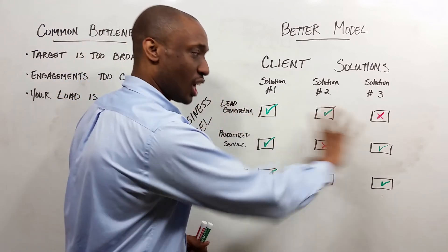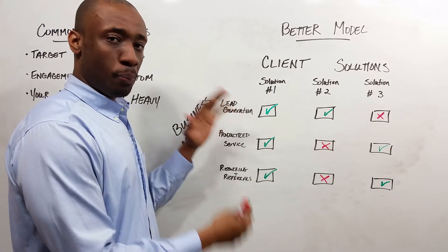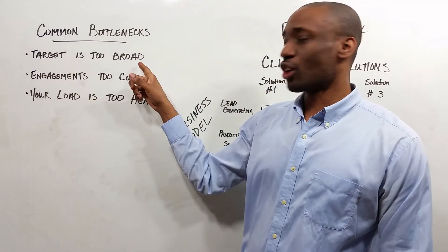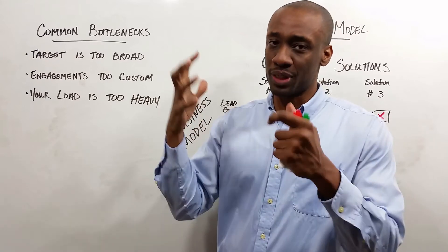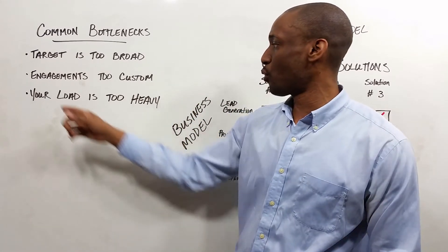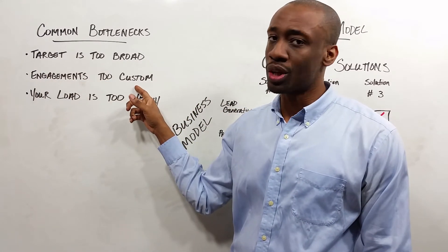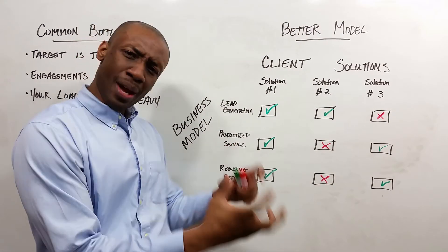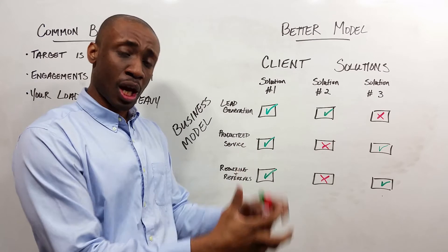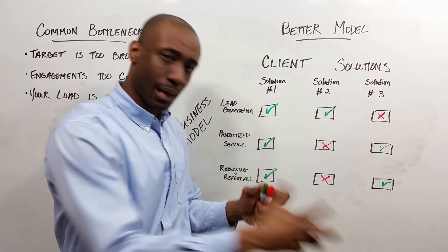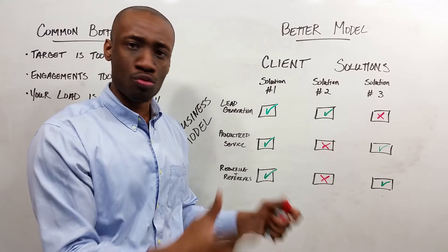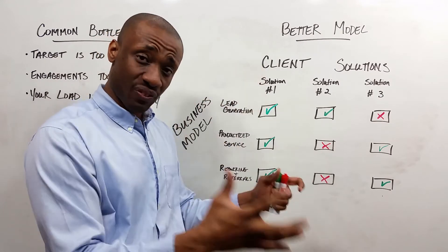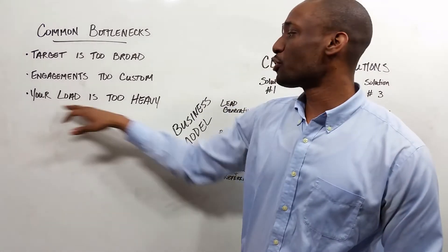So what you've just done is you've just broken apart your business in such a way where you now aren't targeting everybody. They're very specific things that you solve for. Your engagements aren't so custom now. There's a productized way that you do it and you may tweak it for one client or another, but the basic four steps, the basic eight steps, the basic ten steps do not change. That's why they were a lead in the first place, because they needed those specific things to happen.